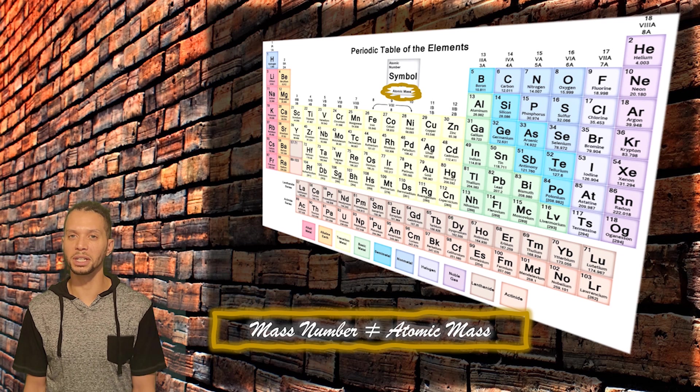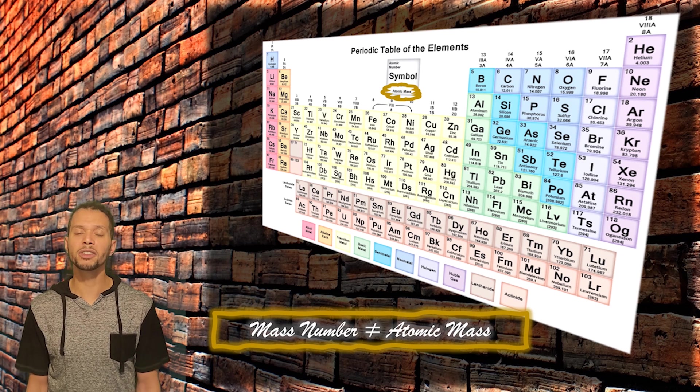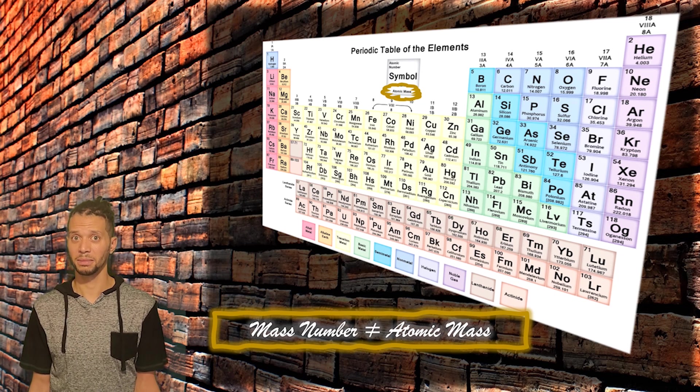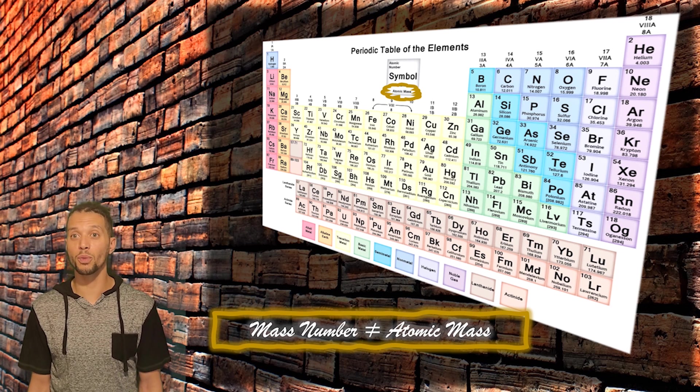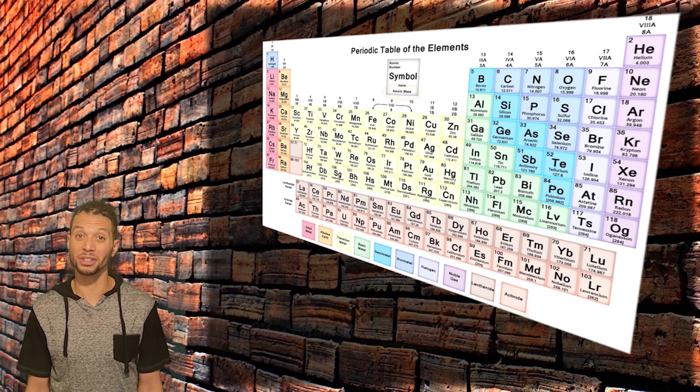So this must mean that the average atomic mass of the elements must be a calculation of different masses of that element, right? Well, it turns out that most elements in our world exist in what I like to think of as different versions of themselves.